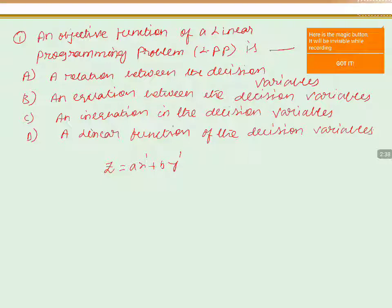If you draw AX plus BY on a graph, you get a straight line, so we call it linear. Since we are going to find a maximum and minimum from these equations, we call X and Y the decision variables. Therefore, Z equals AX plus BY is a linear function of the decision variables — so the answer is option D.